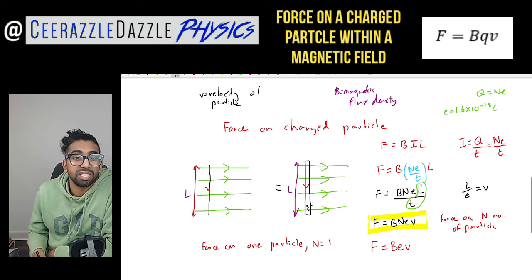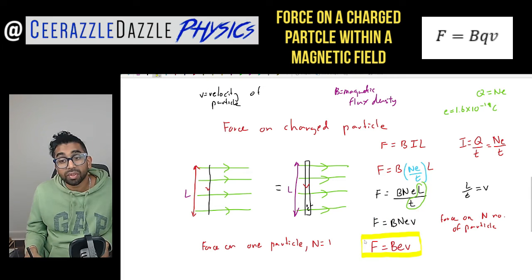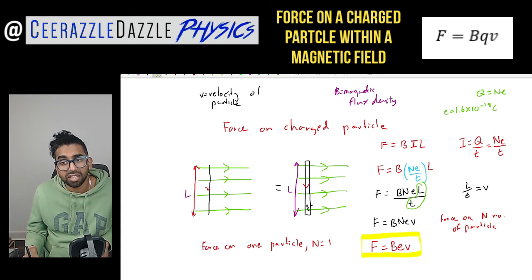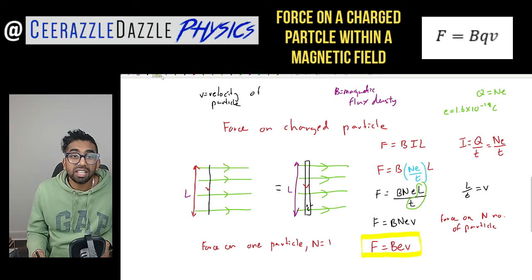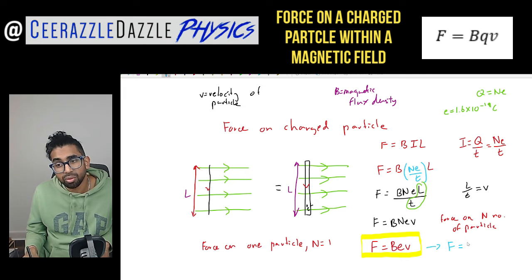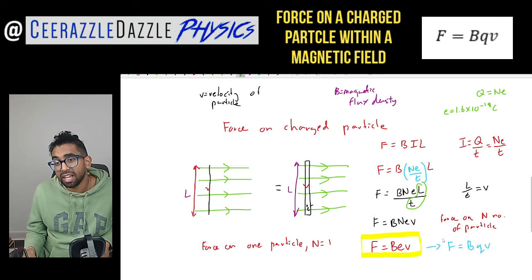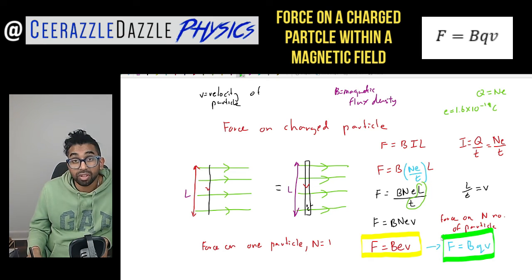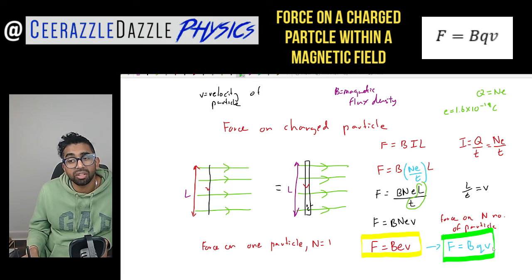This is our formula F is equal to BeV. F is the force, B is the magnetic flux density, E is the electron charge, and V is the velocity of that electron. But if it could be another charged particle, we need a more general expression. So this becomes F is equal to BQV, where Q stands for any charge. That is the more general expression — we only use E when we know it's an electron, but for any charged particle F is equal to BQV.